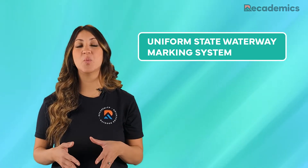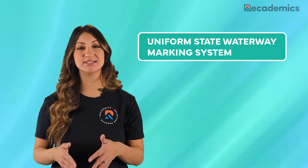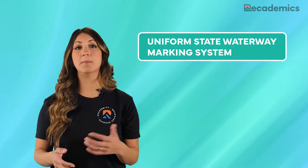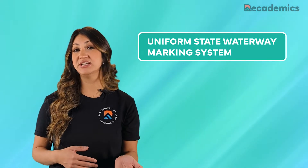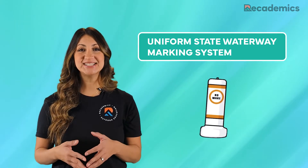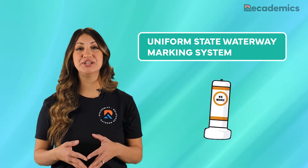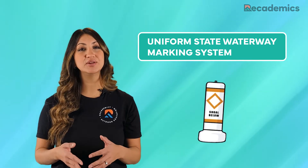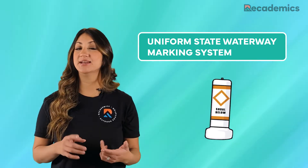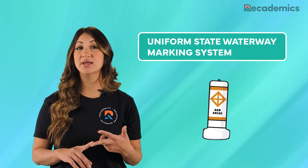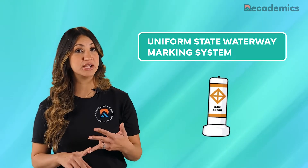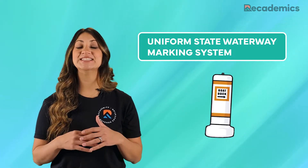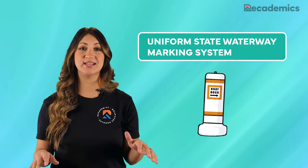Finally, we have the Uniform State Waterway Marking System, which is used most on lakes and inland waterways to help boaters avoid danger and navigate safely. This system primarily uses white buoys with orange markings called regulatory markers. These indicate danger areas, controlled areas, exclusion areas, or provide the boater with more information. This system is used across all states.